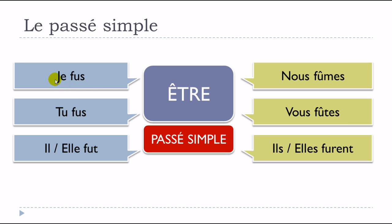One more time — encore une fois. Je fus — final S not pronounced. Tu fus — same thing, final S not pronounced. Il fut, elle fut — final T not pronounced. So basically you have only one phonetical form: fû, fû, fû. Then nous fûmes — final S not pronounced. Vous fûtes — same. Ils furent, elles furent — the ENT ending for the plural is never pronounced: furent.